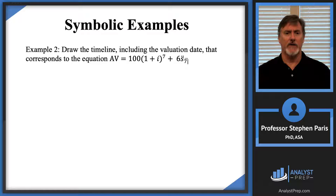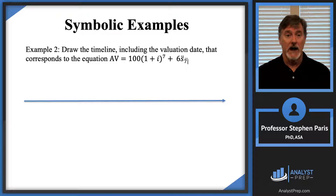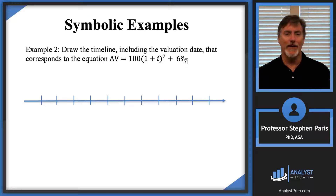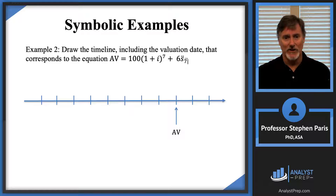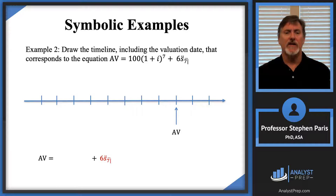Let's look at another example. Draw the timeline including the valuation date that corresponds to this equation: AV equals 100 times (1+i) to the seventh, plus 6 times s-double-dot-angle-7. I'll draw a timeline. I see that I'm going to have seven payments of six, so I need enough tick marks for seven payments. The AV is an accumulated value — I can see that because of the s-double-dot-angle-7, which is an accumulated value of an annuity-due. So I'll put the valuation date towards the right on the timeline.